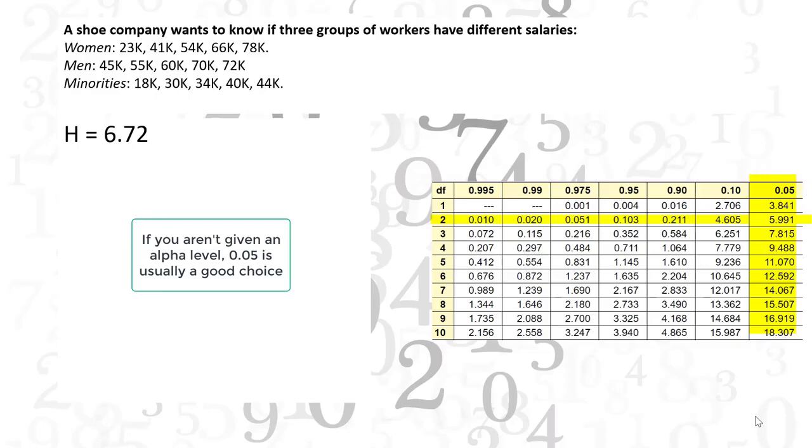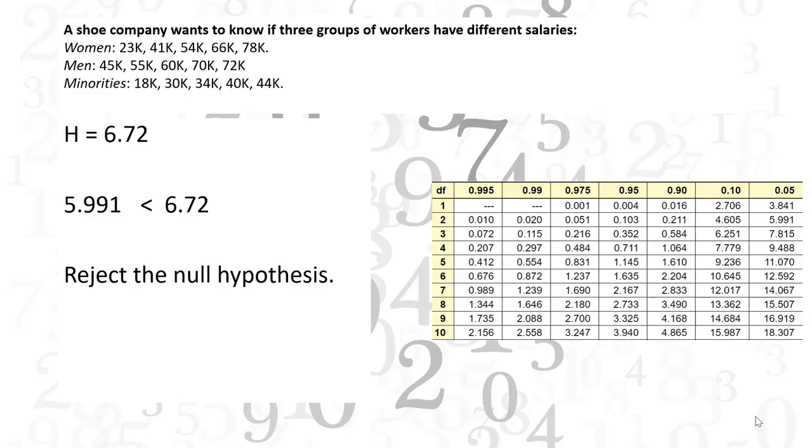The critical chi-square value is 5.991. Finally, we compare the H value to the critical chi-square value. If the critical chi-square value is less than H, reject the null hypothesis that the medians are equal.